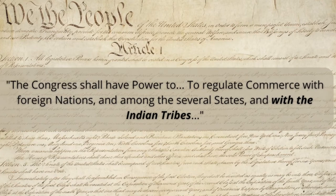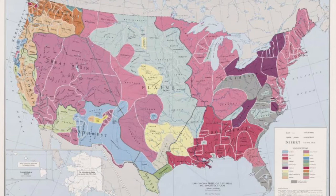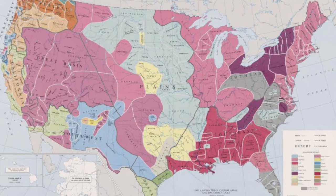These provisions reflected the position of the framers, confirmed by opinions of the Supreme Court, that Native Americans were not citizens of the United States or the states in which they resided. At the time of the signing of the Constitution, Native American tribes were distinct political entities, separate from states or the federal government, with whom the United States would deal on a basis similar to that with which it dealt with foreign nations.